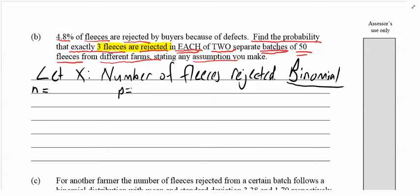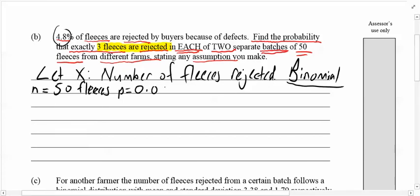That means the number of trials in that batch equals 50. So 50 fleeces—that contextual language, remember to write fleeces is really important. Within that batch of 50 fleeces, what's the probability of a fleece being rejected? Well, it's 4.8%, isn't it? So 0.048. Got to remember that zero.